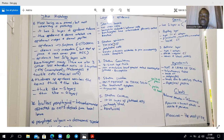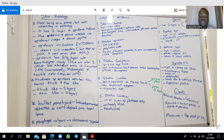The stratum spinosum is the thickest and is composed of polyhedral cells. The keratinocytes within the stratum spinosum are larger than those in the stratum basale. The keratin filaments assemble to form microscopically visible tonofibrils. Those keratinocytes are characterized by cytoplasmic processes, also known as spines — from where the name stratum spinosum is derived. Those cells can also be referred to as prickle cells.